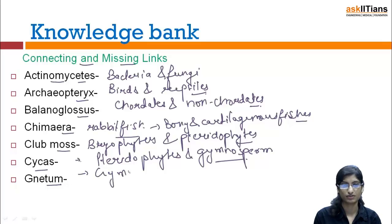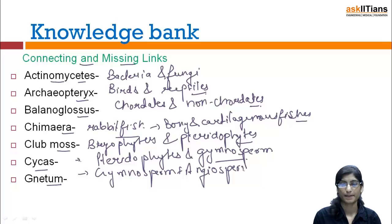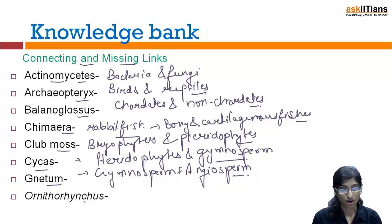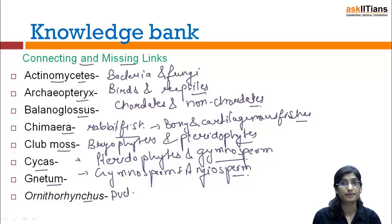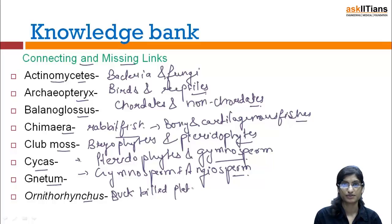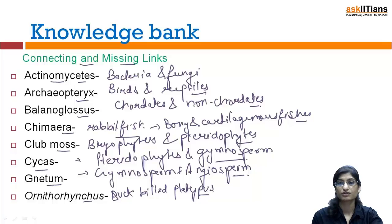Next one is Gnetum — it is in gymnosperm, and it is the connecting link between gymnosperm and angiosperm. Next one is Ornithorhynchus, the duck-billed platypus, and this is the connecting link between reptiles and mammals.